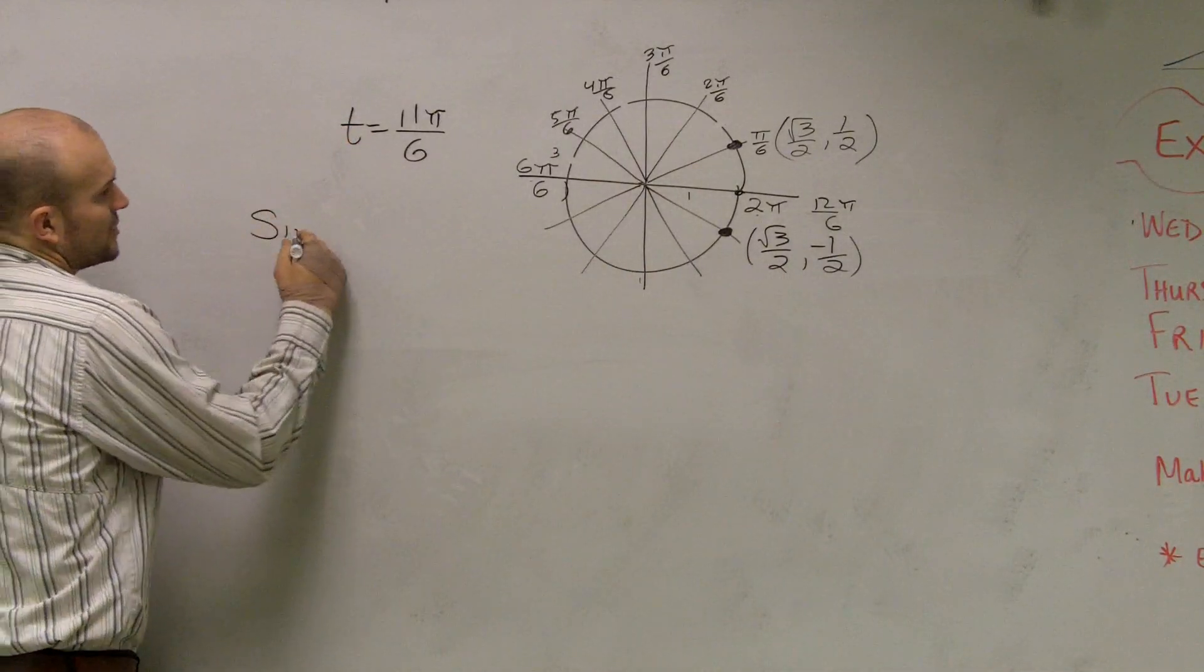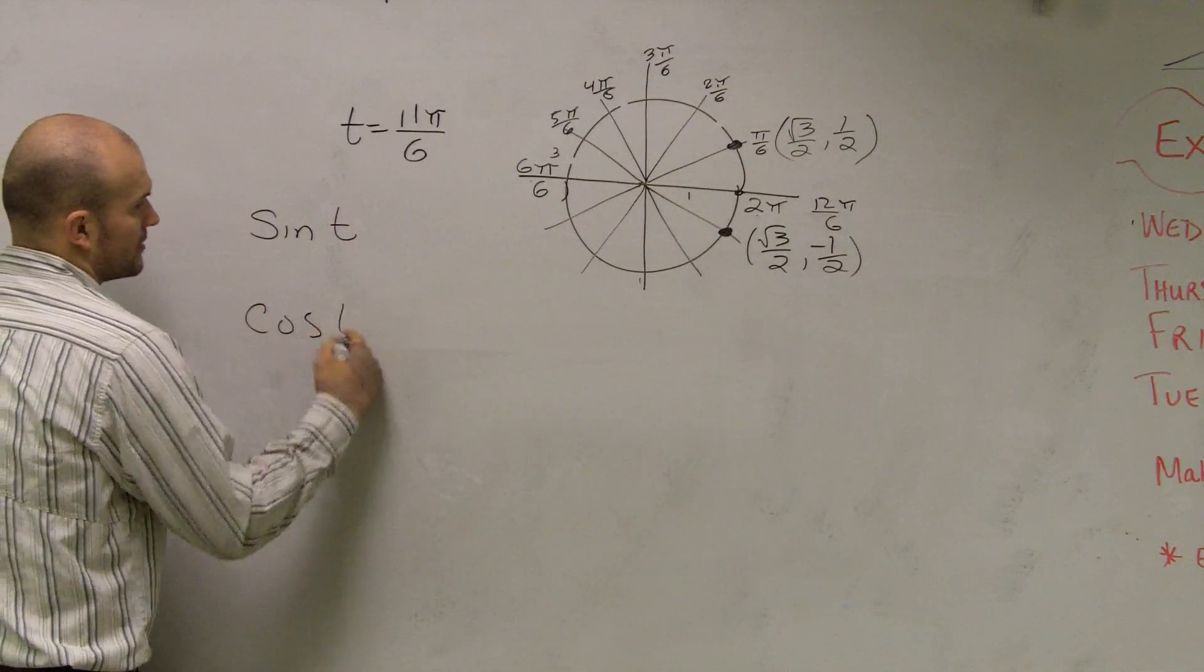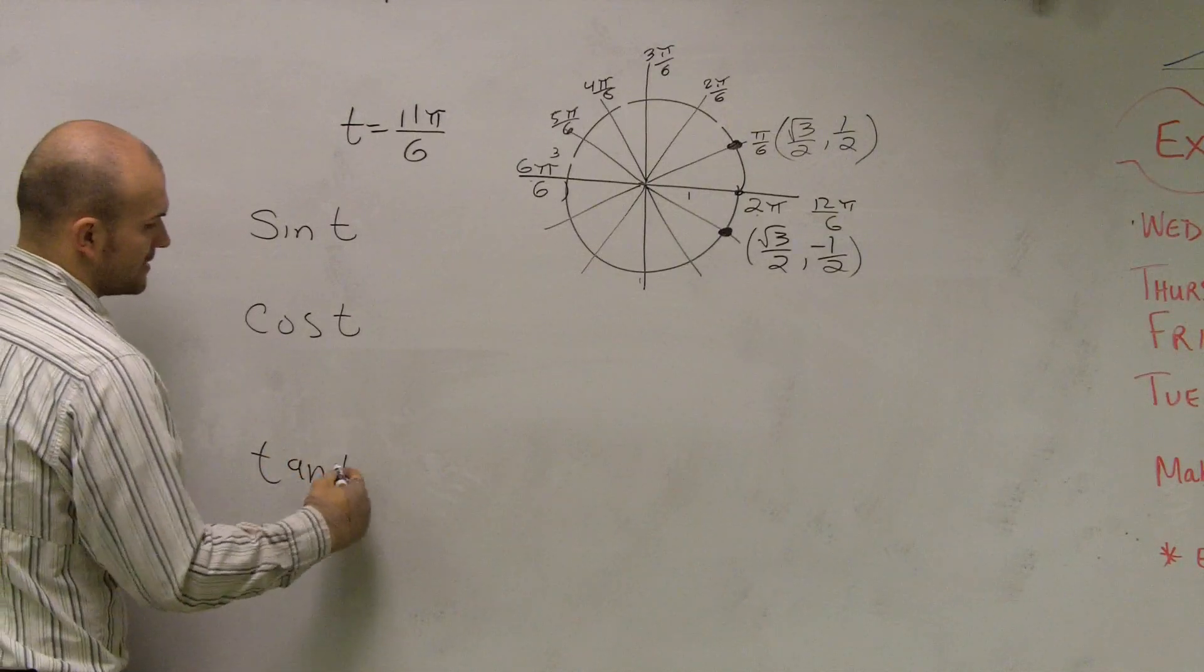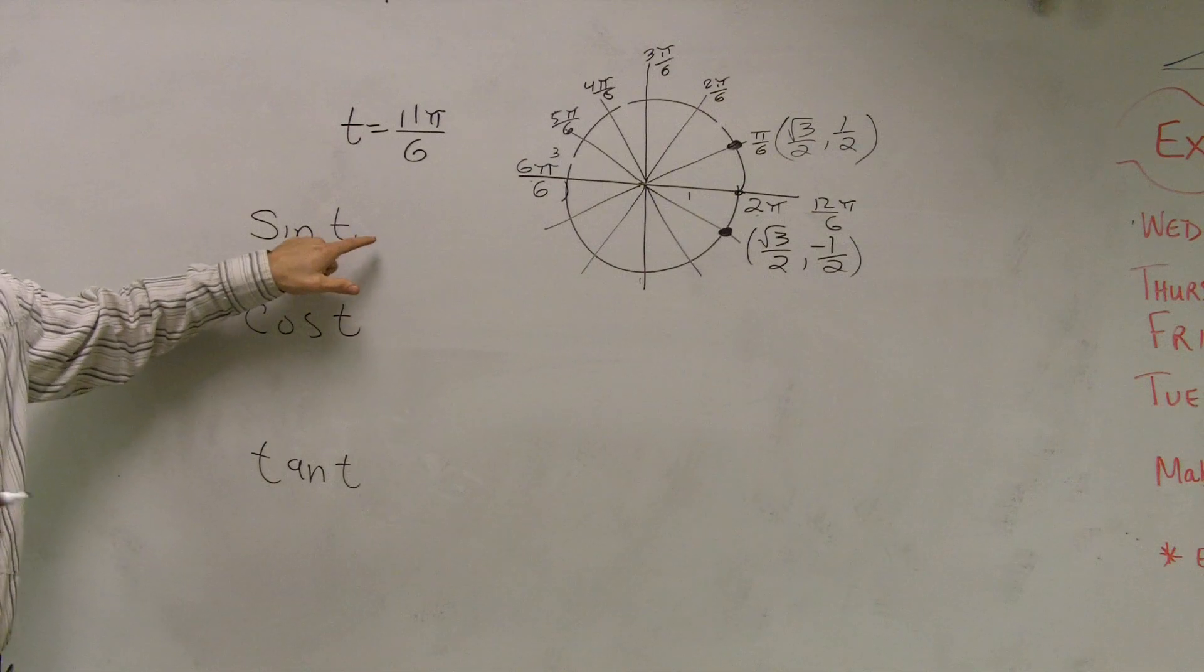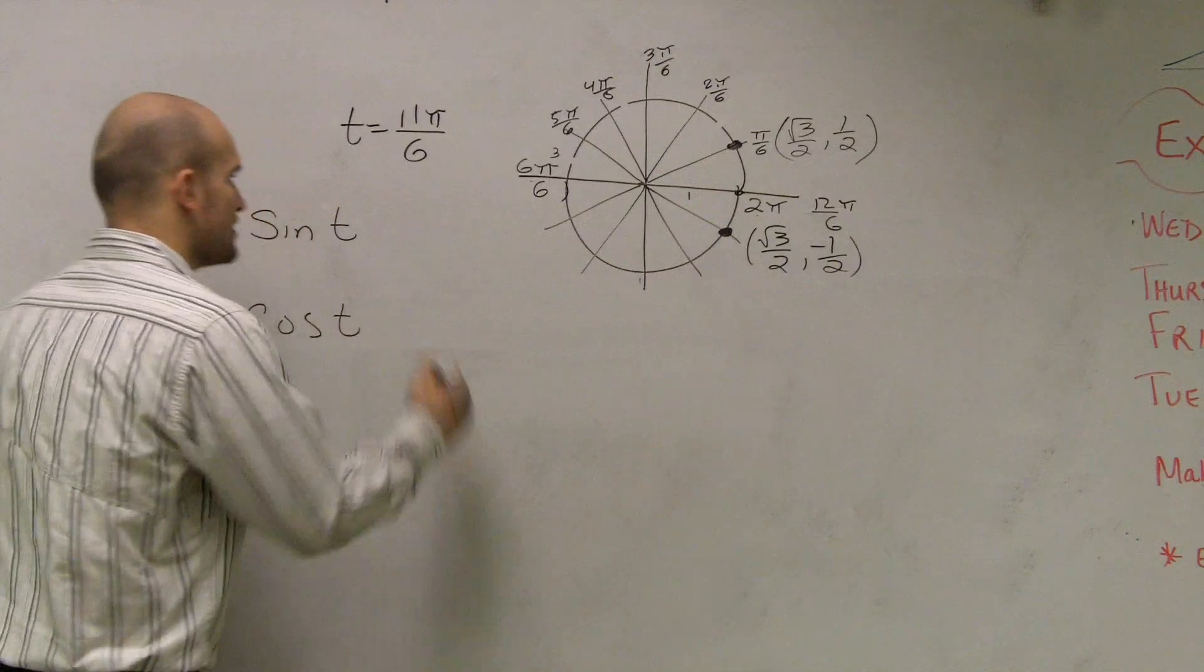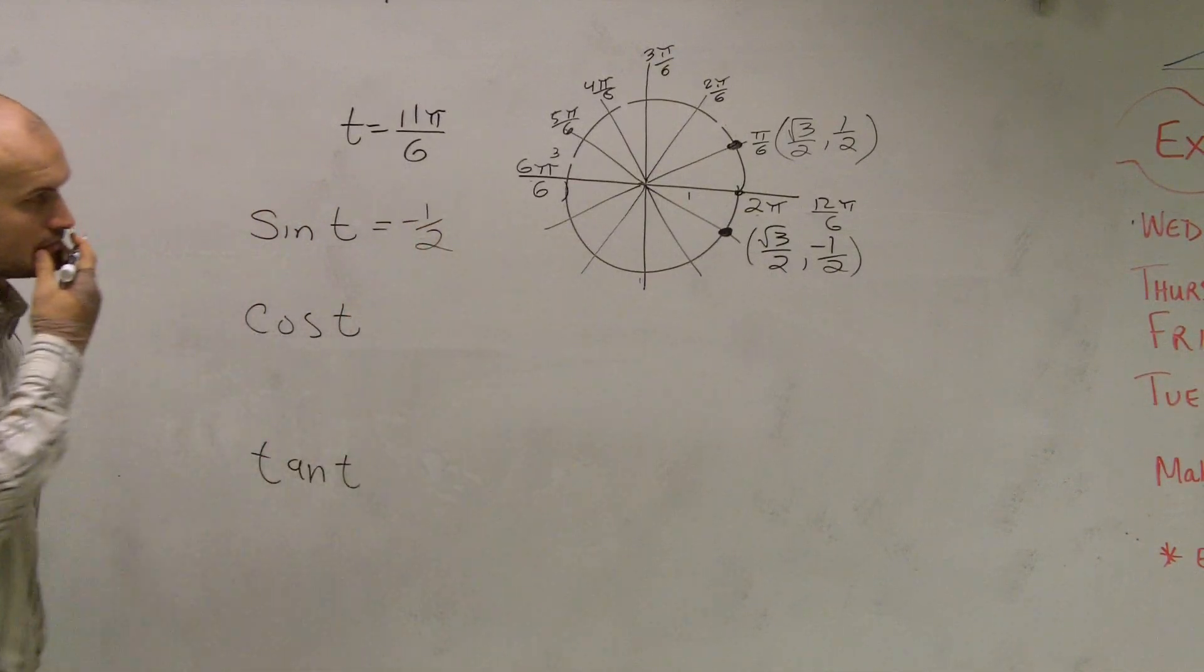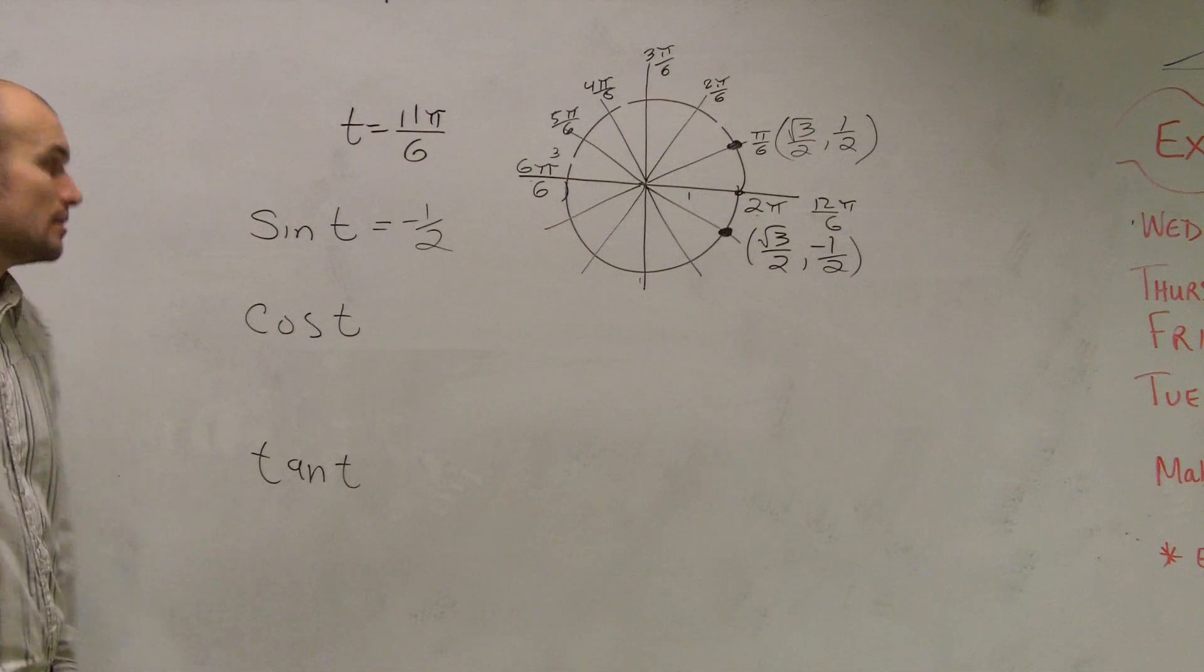Now the next thing we need to do is evaluate sine of t, cosine of t, and tan of t. Sine of t is equal to y, the y-coordinate of your point t. So my y-coordinate here is negative 1 half.